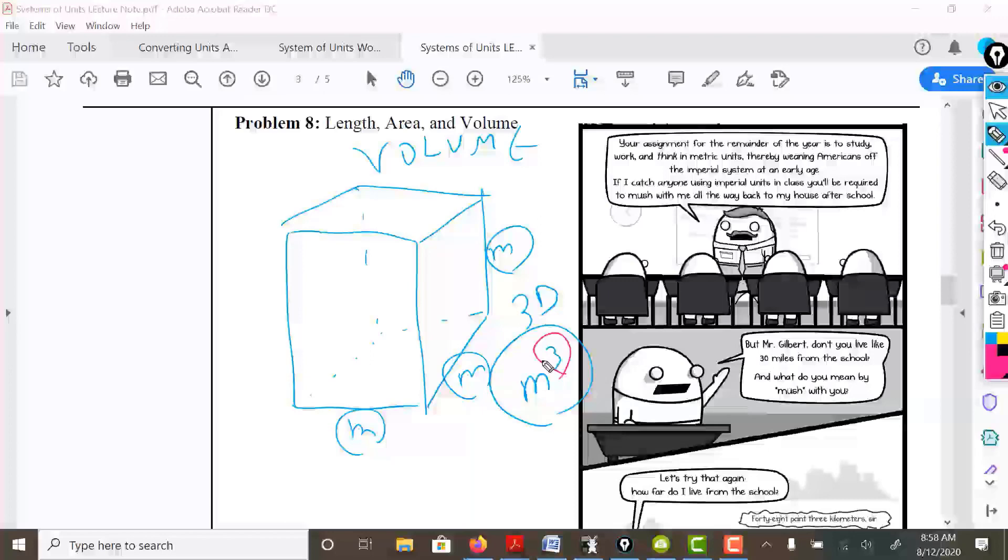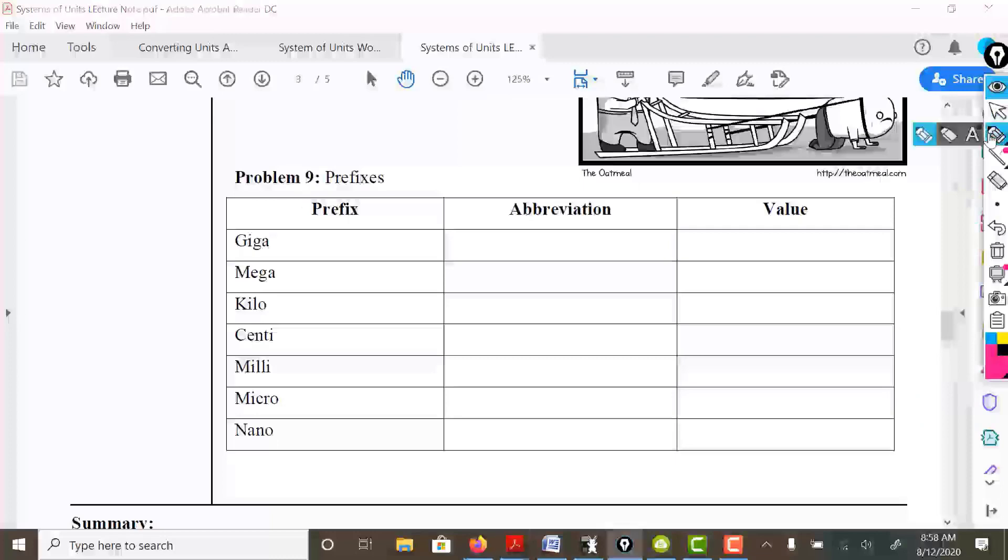Problem nine will be very useful and important to you. I would like you to take your time to fill this out. Let me fill out a few of these for you. For example, giga - the abbreviation for that is a capital G, and this is going to be 10 to the ninth power. So if I have one gigameter, there's actually 10 to the nine meters. Abbreviation for mega is capital M. Kilo is a little k. Centi with a little c. Milli be a little m. Nano is a little n.